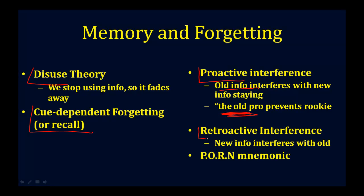Then you've got retroactive interference, and that's where the new information interferes with the old. This happens to me every time I get a new semester of students. As I'm busy learning the names of my new students, I tend to forget the names of my previous students, even if it was someone from just two, three, or four weeks ago. It really helps us recall your names if you make an impression on us. But even then, retroactive interference may play a role and new students' names may interfere with our ability to recall old student names.